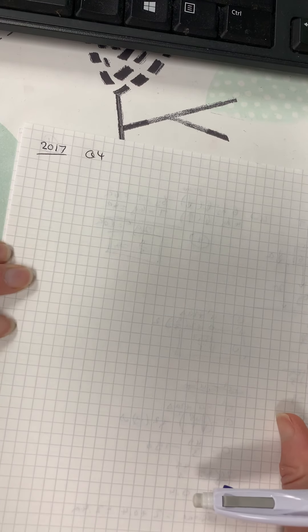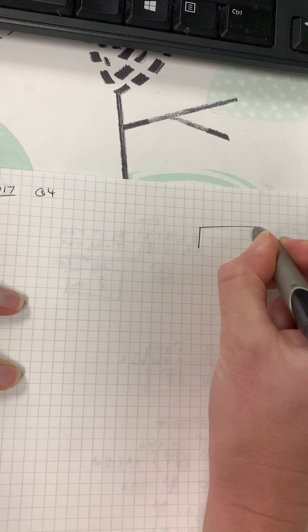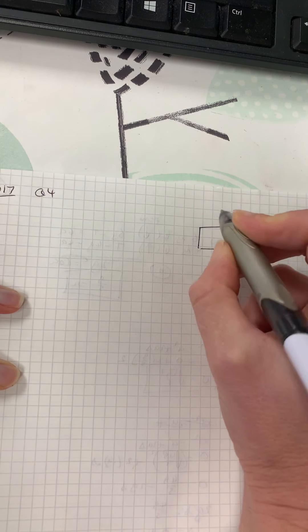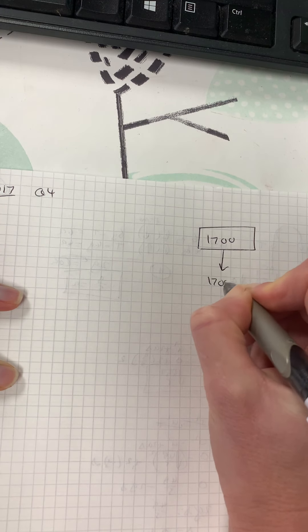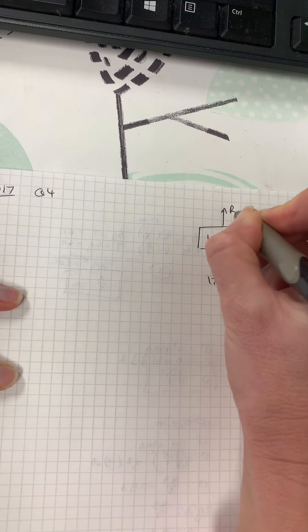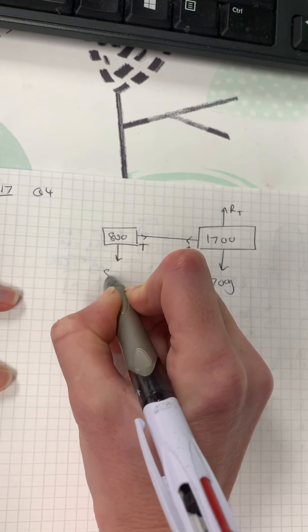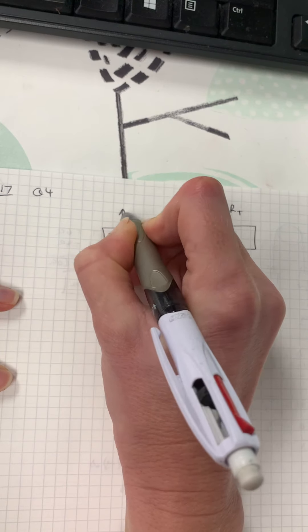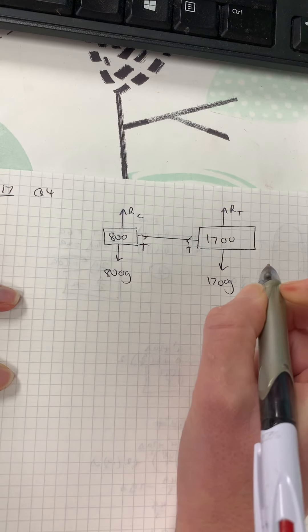Okay, 2017. We have got a truck pulling a car. So the mass of the truck is 1700, so weight 1700g, and reaction of the truck, tension of the tow bar. And you've got a car of mass 800, so weight 800g, and reaction of the car. Just make sure they've got different reactions on them.